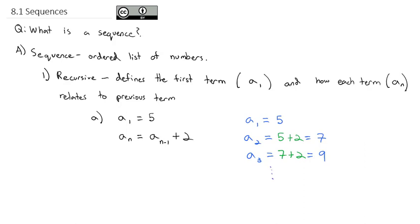And we can keep going. And in fact, we usually will list out the numbers in a sequence as inside brackets, maybe 5, 7, 9. The next one you could see would be 11, then 13, and so on. That is the sequence of terms defined by this recursive formula.